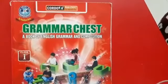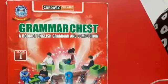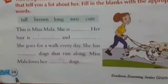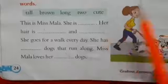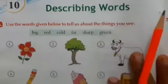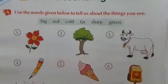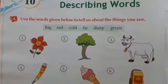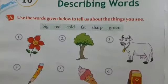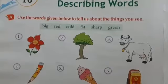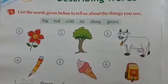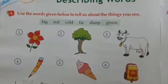Hello children, how are you all today? We are going to learn grammar, so open your grammar book to page number 24, chapter number 10: describing words. Do you know what a describing word is? Describing words tell us something more about a person, animal, birds, place, or things. Describing words tell us about their color, number, shape, size, and quality.